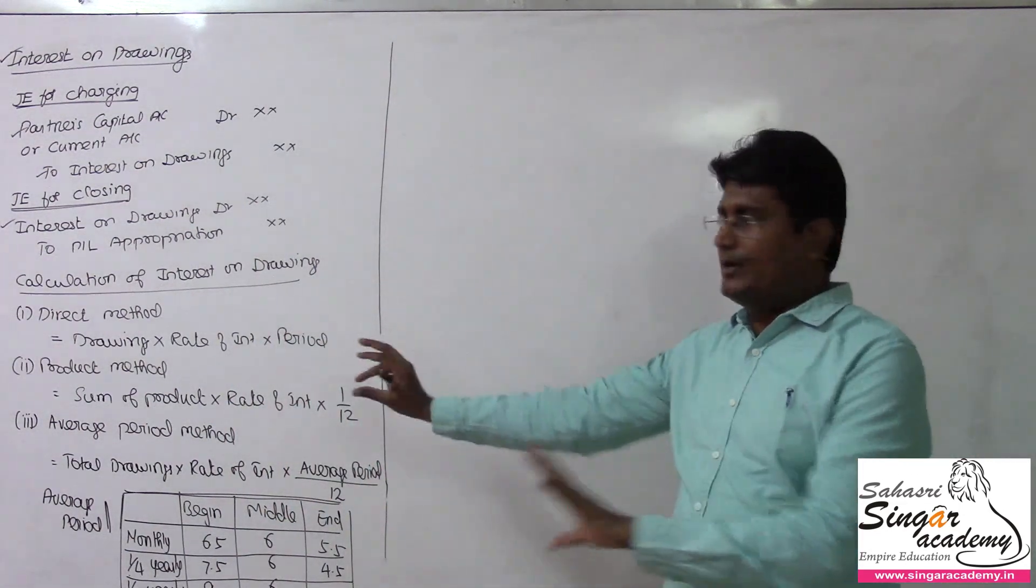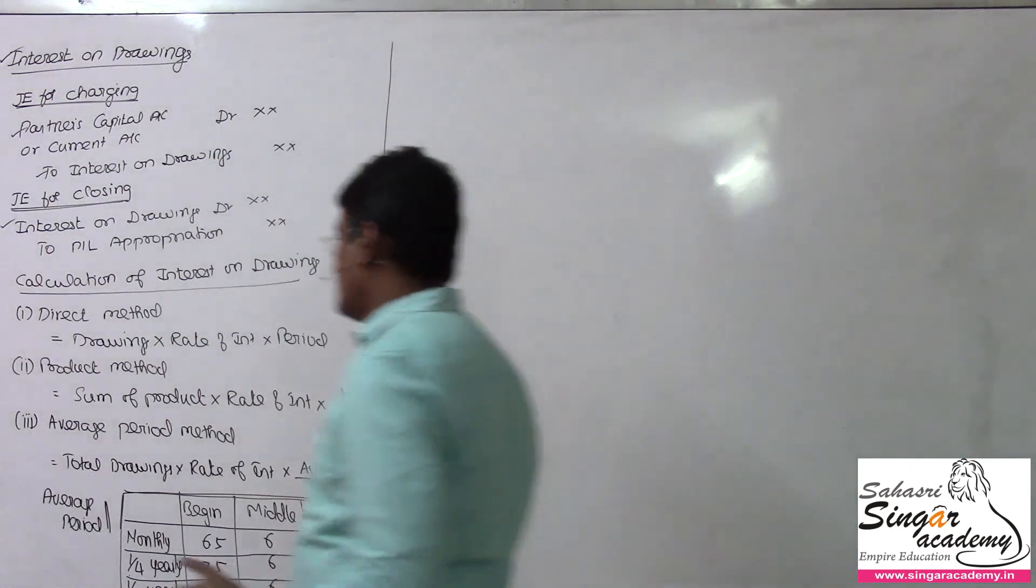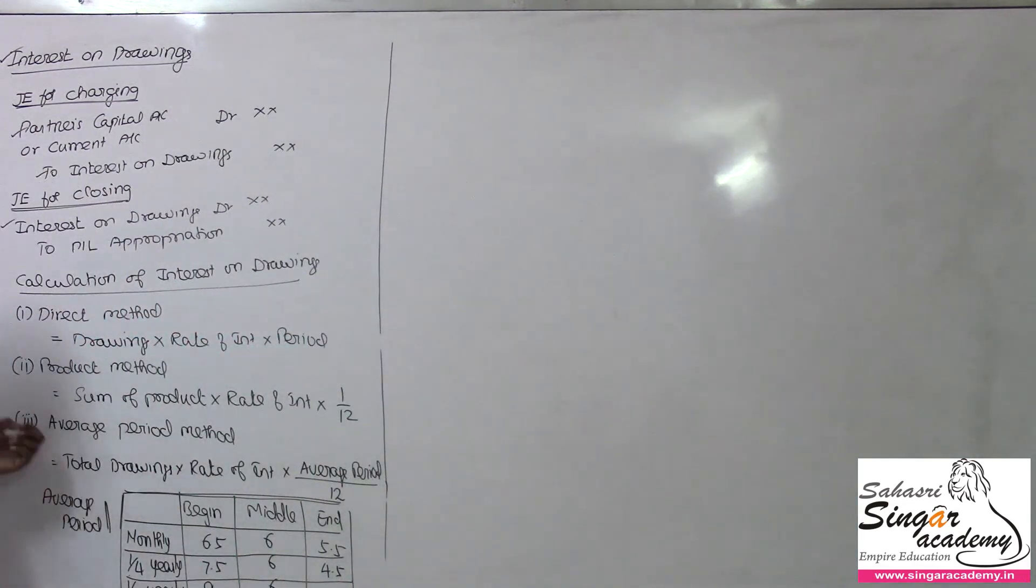What is available in your text, I am going to work out here. Average period method: total drawings times the rate of interest times average period divided by 12. You can easily memorize this.